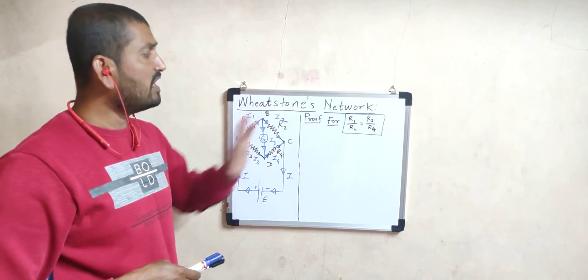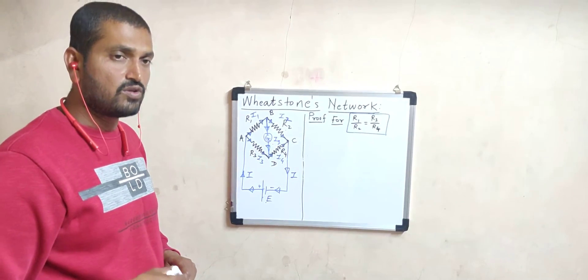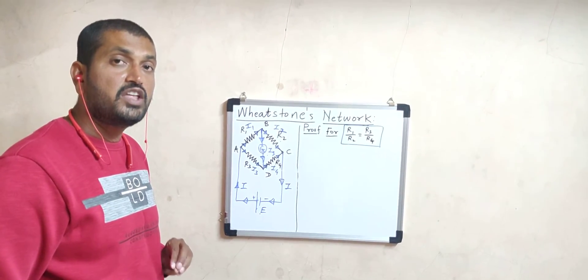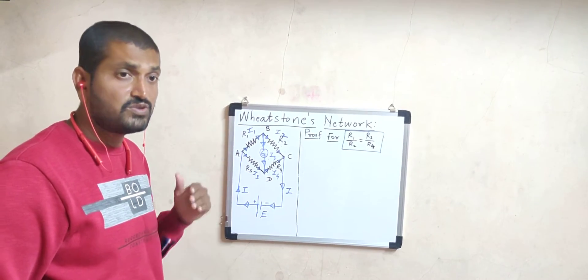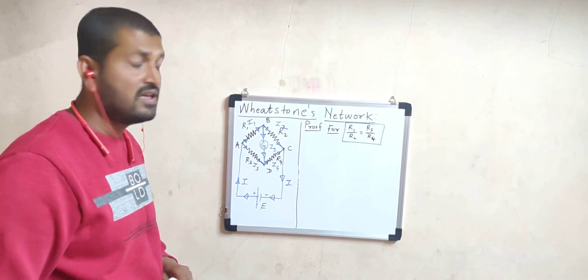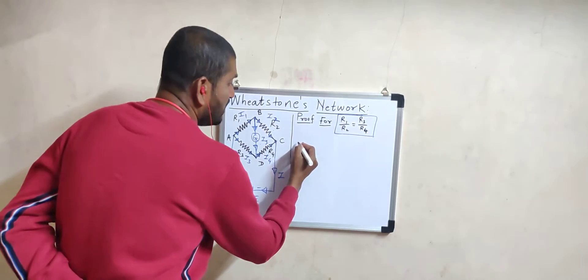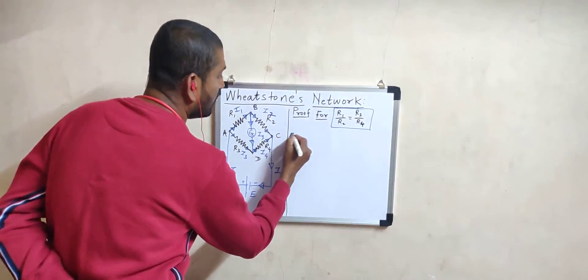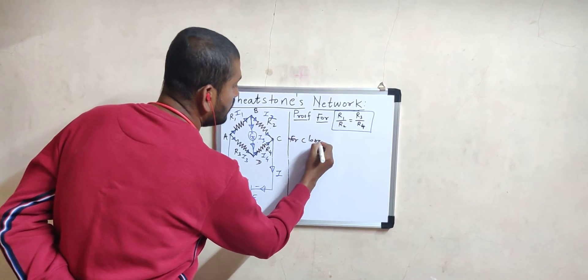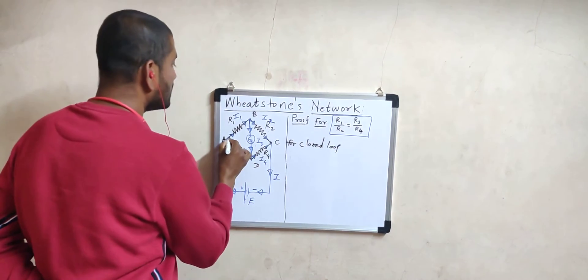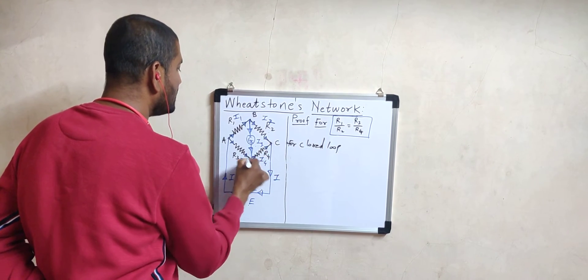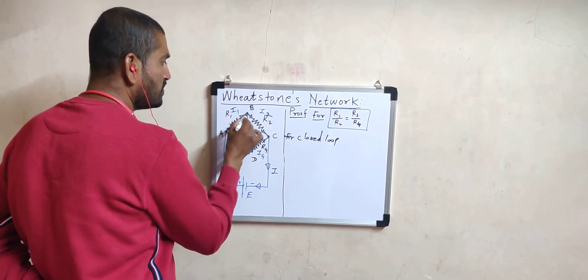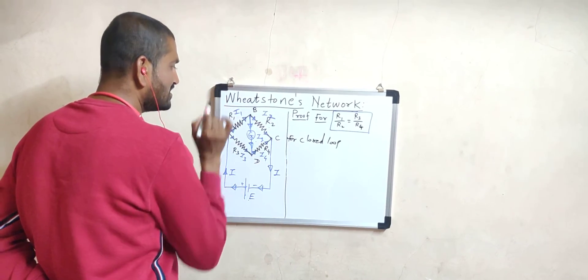To verify the balance condition R1/R2 = R3/R4, we apply Kirchhoff's second law. For the closed loop A-B-D-A, and also for closed loop B-C-D-B, we apply KVL. There are multiple closed loops, but we will consider only two: loop A-B-D-A and loop B-C-D-B.